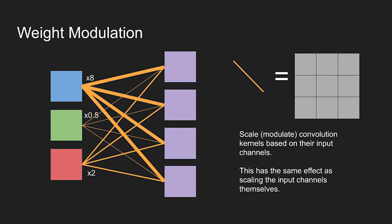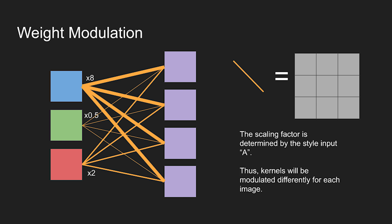To get the same effect as scaling the input feature maps we can scale each kernel based on their input channel. All kernels with the same input would have the same scale. This scaling factor is determined by the style vector thus being affected by the latent input modulating differently for each image.